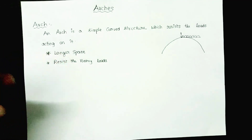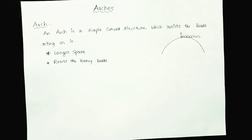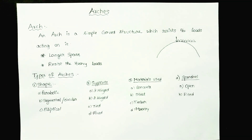Due to arch action, the moment developed in the structure is greatly reduced. If the moment is reduced, the size of the section is reduced; if the size of the section is reduced, the overall cost of construction is economical. That is the great advantage of providing an arch. Now, arches are mainly classified into four categories: based on shape, supports, material used, and spandrel.